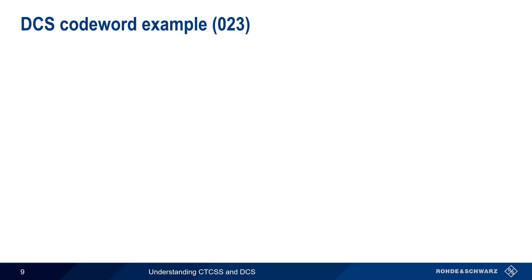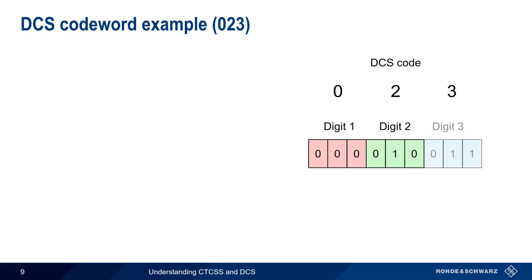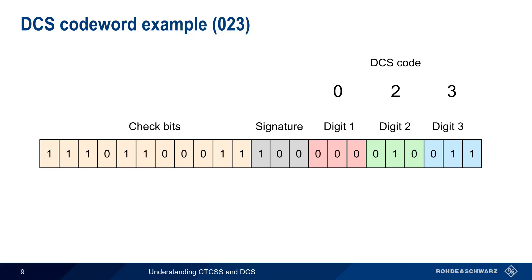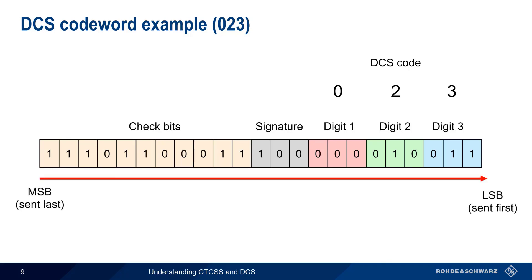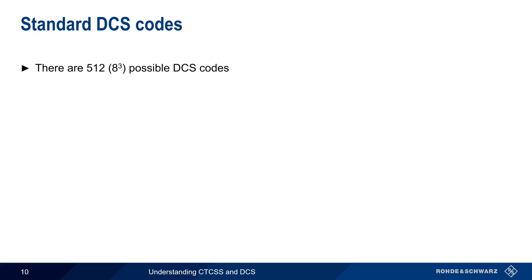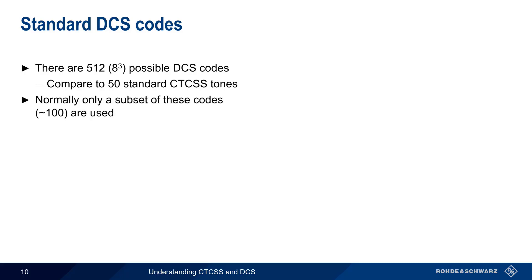Let's look at the DCS code word for the code 023. Each digit is encoded in three bits, and a special bit sequence called a signature is required in bits 10, 11, and 12. Eleven check bits are used to detect any errors, and the word is transmitted in the order of least to most significant bit. Since each digit of the DCS code is three bits long, there are potentially 8 to the third, or 512 possible DCS codes. This is significantly more than the standard 50 tones used in CTCSS. However, in practice, only a subset of these codes are used, usually about 100.